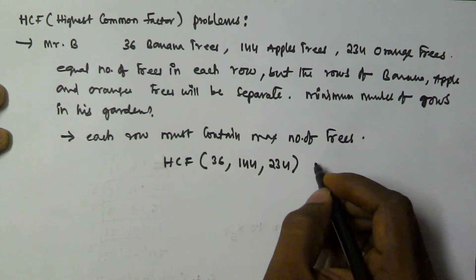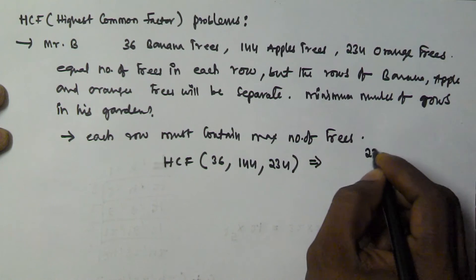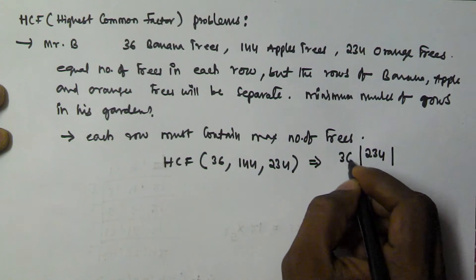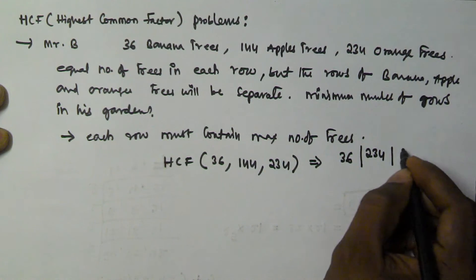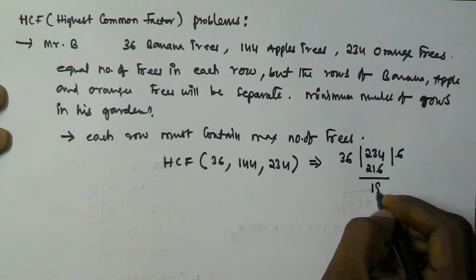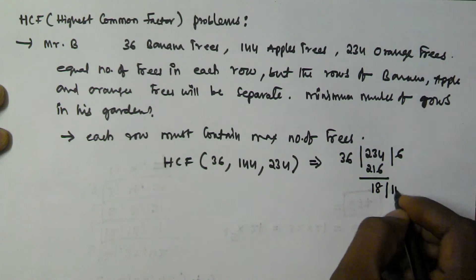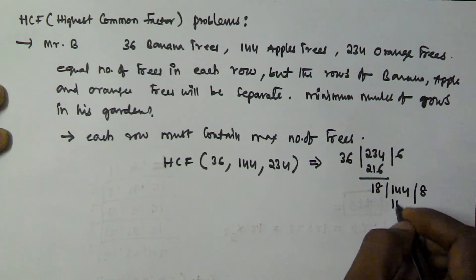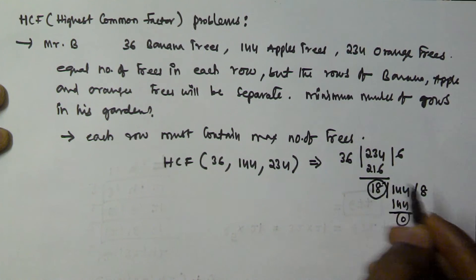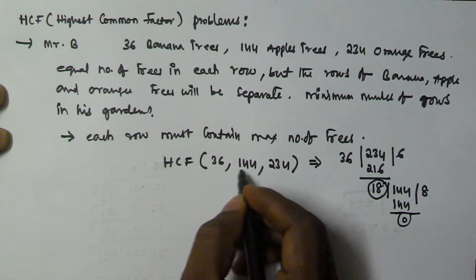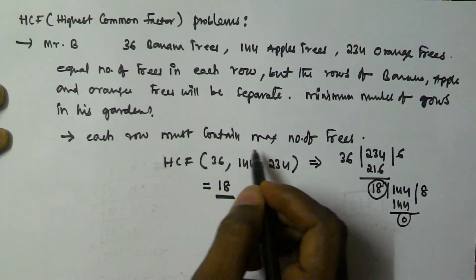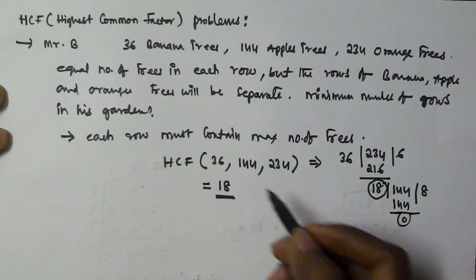To find HCF of 36, 144, and 234: we take the largest number, 234, and divide by the smallest, 36. 6 times 36 is 216, so the remainder is 18. Then 18 divides 144 exactly with remainder 0. So the HCF of 36, 144, and 234 is 18 — meaning each row contains 18 trees.